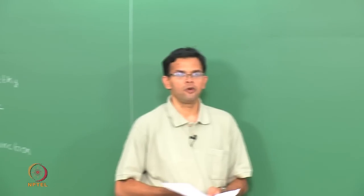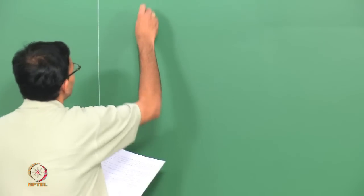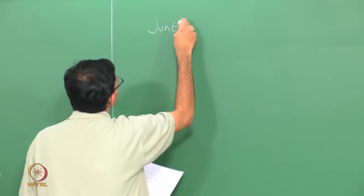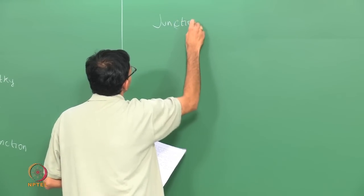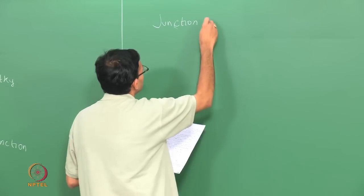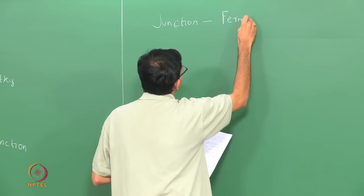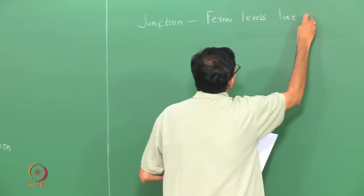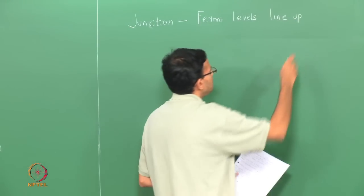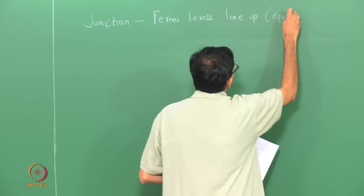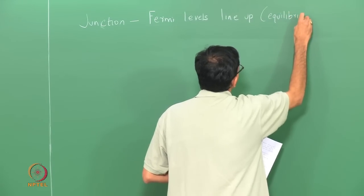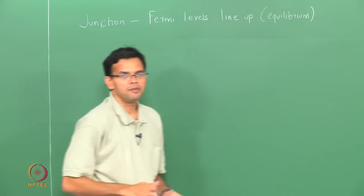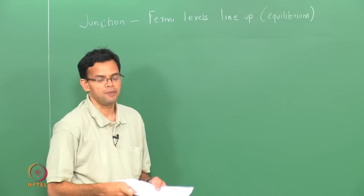The most important rule when a junction is formed is that the Fermi levels must line up at equilibrium. Whenever you have a junction, the Fermi levels must line up. Equilibrium here means there is no external potential applied to the system.